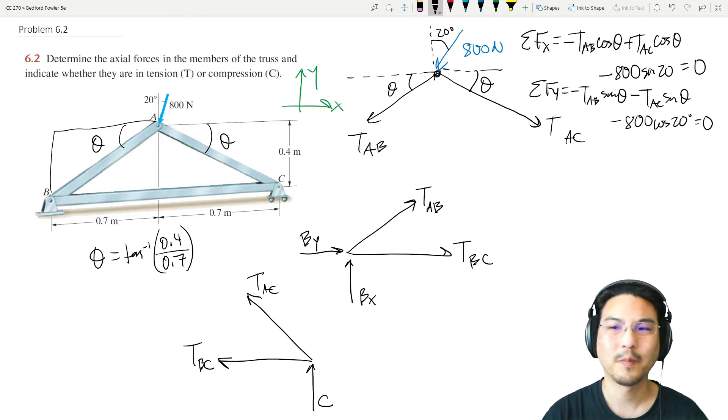I drew all of my arrows in tension. If the number you calculate is positive, that means it's tension. If the number you calculate is negative, then it's compression. So you solve these two equations, two unknowns. You would know TAB, which would be the same here. You would know TAC, which is the same as TAC right here.